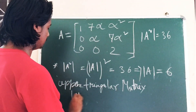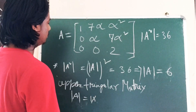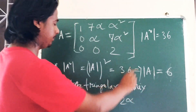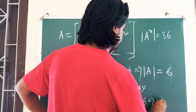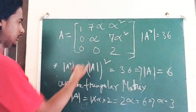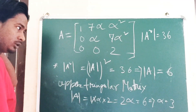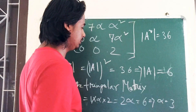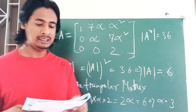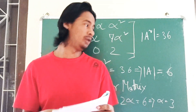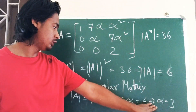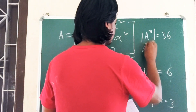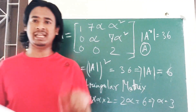Since the options given are positive values — 3, 1/3, 7, 1/7 — we take the positive value, so α = 3. Option A is the correct answer. These are the solutions. Please stay tuned for the next video where more problems will be solved. Thank you.